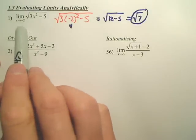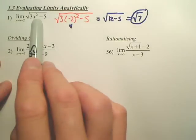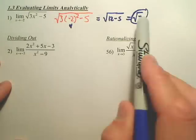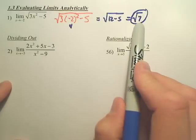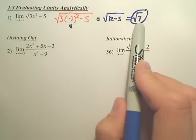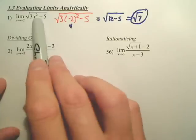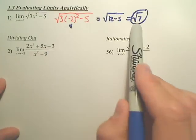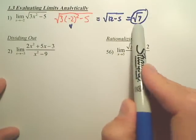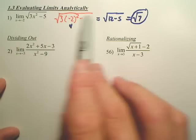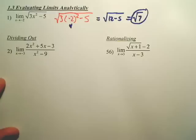So the limit as x approaches negative 2 of this function would be the square root of 7. Basically, the output is the square root of 7, so so is the limit. If you approach from both sides of negative 2, you'd approach the square root of 7. That's the easiest. Always plug it in. Easy.